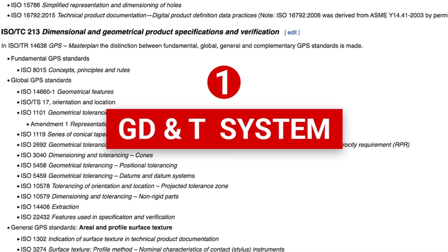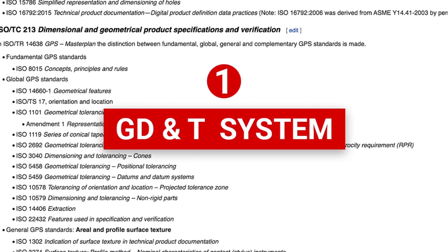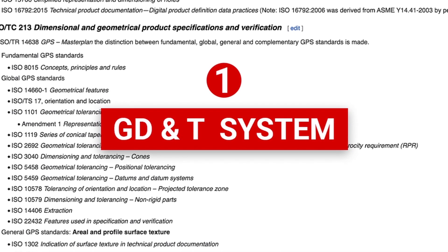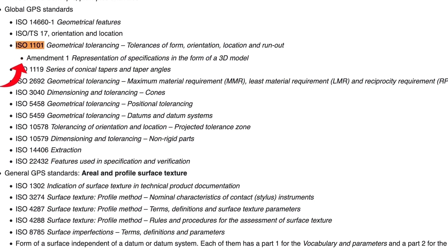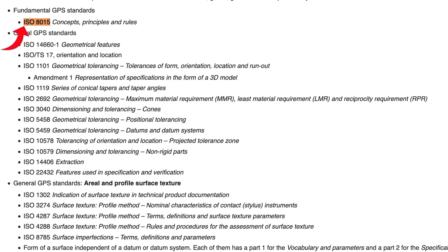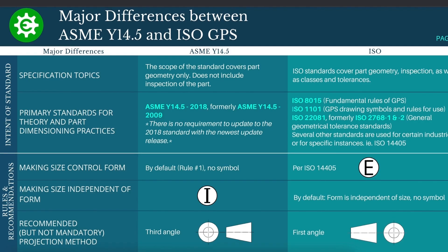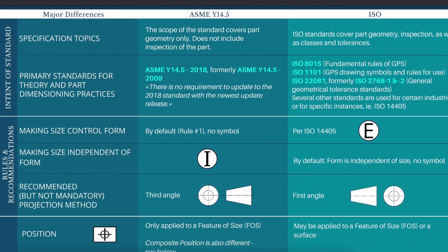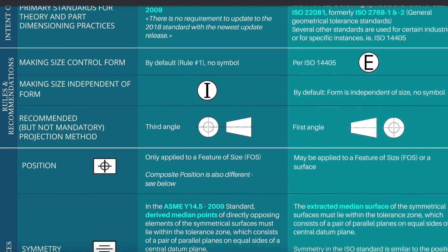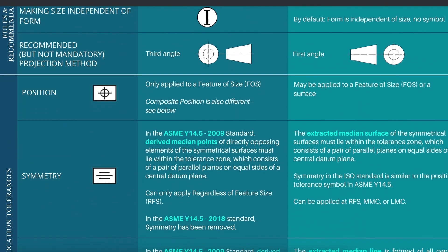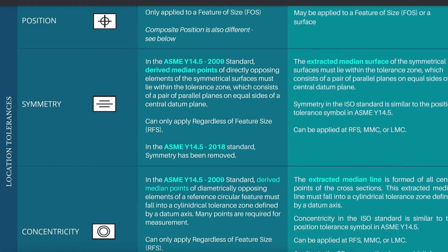Step number one. Indicate which GD&T system you are using. The most common ones are ISO 1101, ISO 8015 and ASME 14.5. And I want to make the point that no system is better than any other. They're just different. And that's why you must tell us which one you're working to.